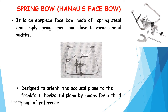Coming to the Hano facebow: it is an earpiece type of facebow made of spring steel and simply springs open and close to various head sizes. It is the most commonly used facebow. It is designed to orient the occlusal plane to Frankfurt horizontal plane by means of a third point of reference. Arbitrary earpiece type, arbitrary fascia type, and kinematic facebows are also available from Hano.